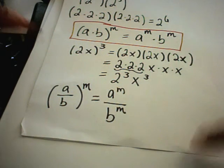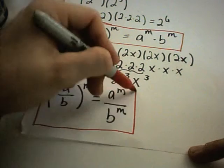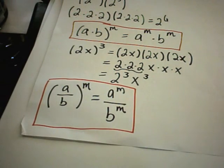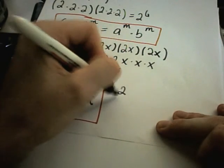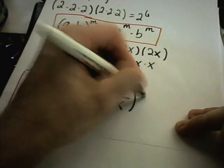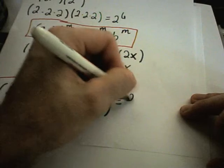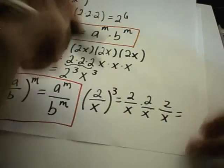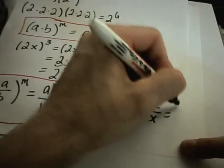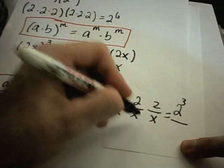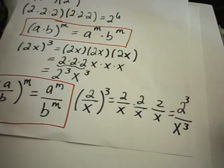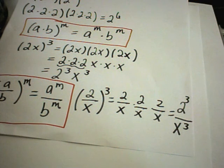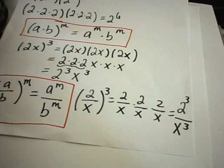To illustrate: suppose I have 2 divided by x raised to the third power. That means 2 over x, times 2 over x, times 2 over x. On top I have 2 times 2 times 2, which is 2 to the third. On the bottom I have x times x times x, which is x to the third. You could simplify 2 to the third down to 8, but we'll leave it as is to illustrate this property.